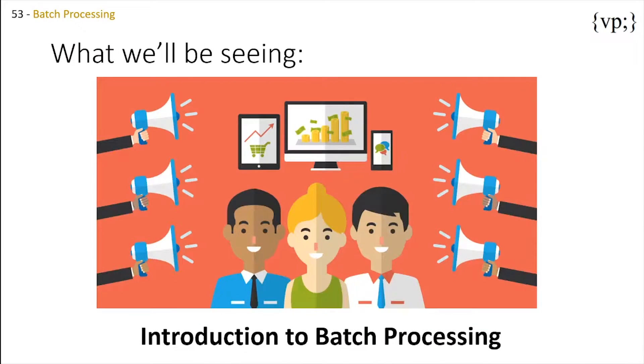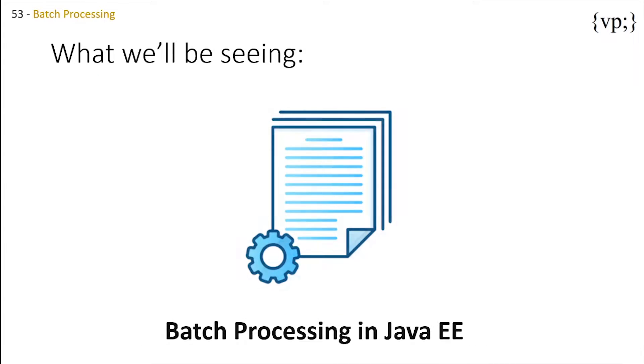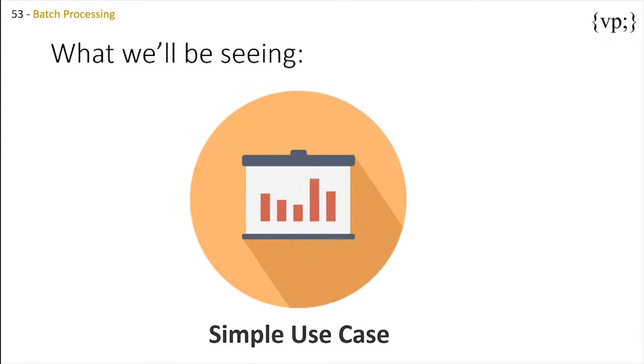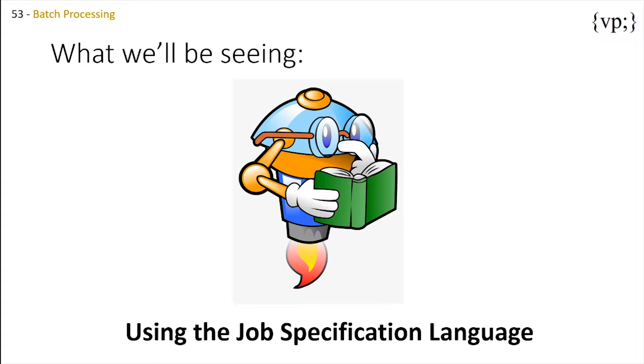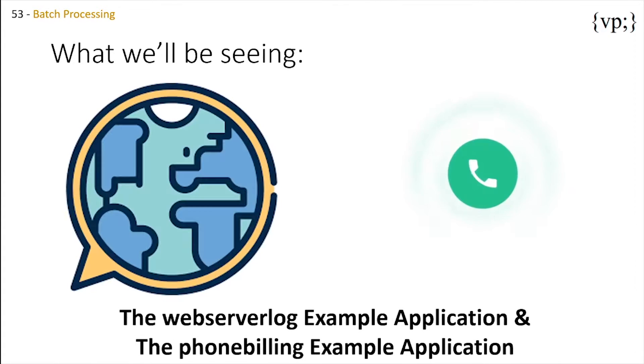What we'll see in this tutorial will be first an introduction into batch processing, batch processing in Java EE, a simple use case using the job specification language, and two examples: the web server log example application and the phone billing example application.